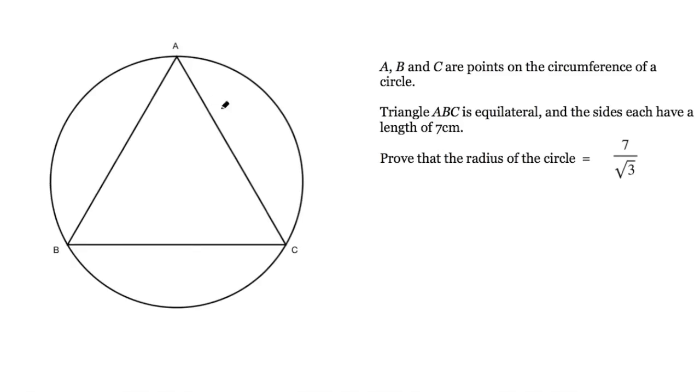So here we have our equilateral triangle and one side is 7 cm long. Because it's equilateral we know that one angle will be 60 degrees. We're looking for the radius, which is the line from a point on the circumference to the centre of the circle.